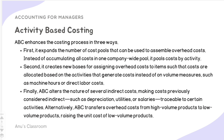Third, it alters the nature of several indirect costs, making costs previously considered indirect — such as depreciation, utilities, or salaries — traceable to certain activities. It also transfers overhead costs from high-volume products to low-volume products, tracing the unit cost of low-volume products more accurately. This allows us to find out exactly how much it costs to produce one extra unit, enabling more precise profit calculations and budgeting.